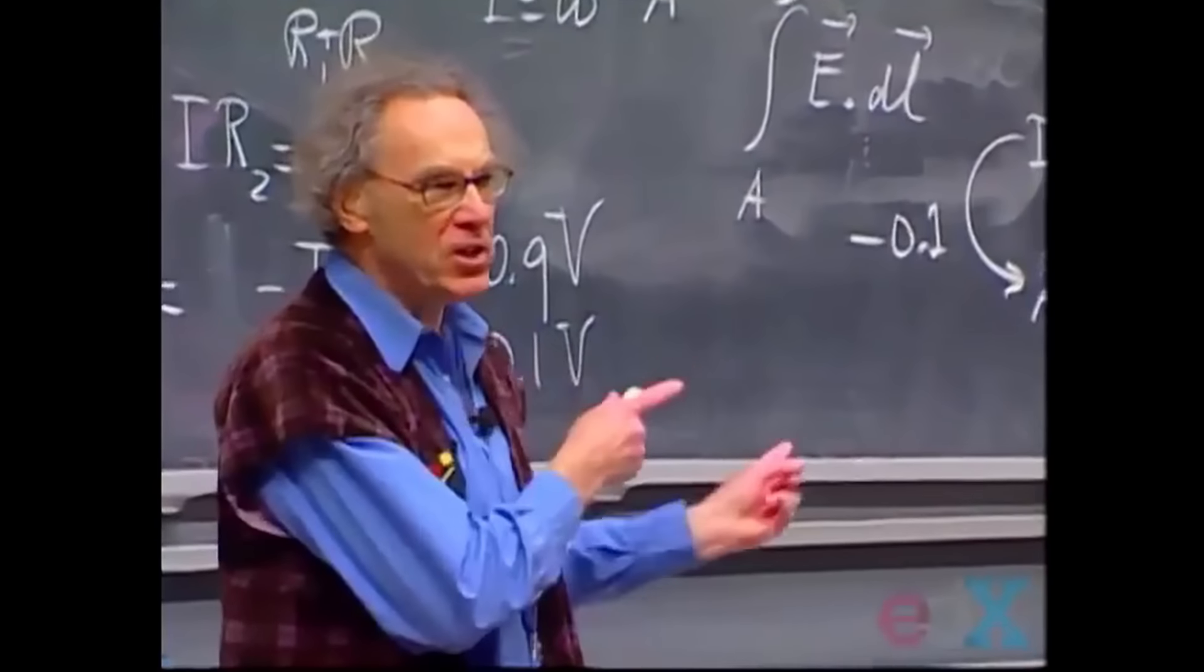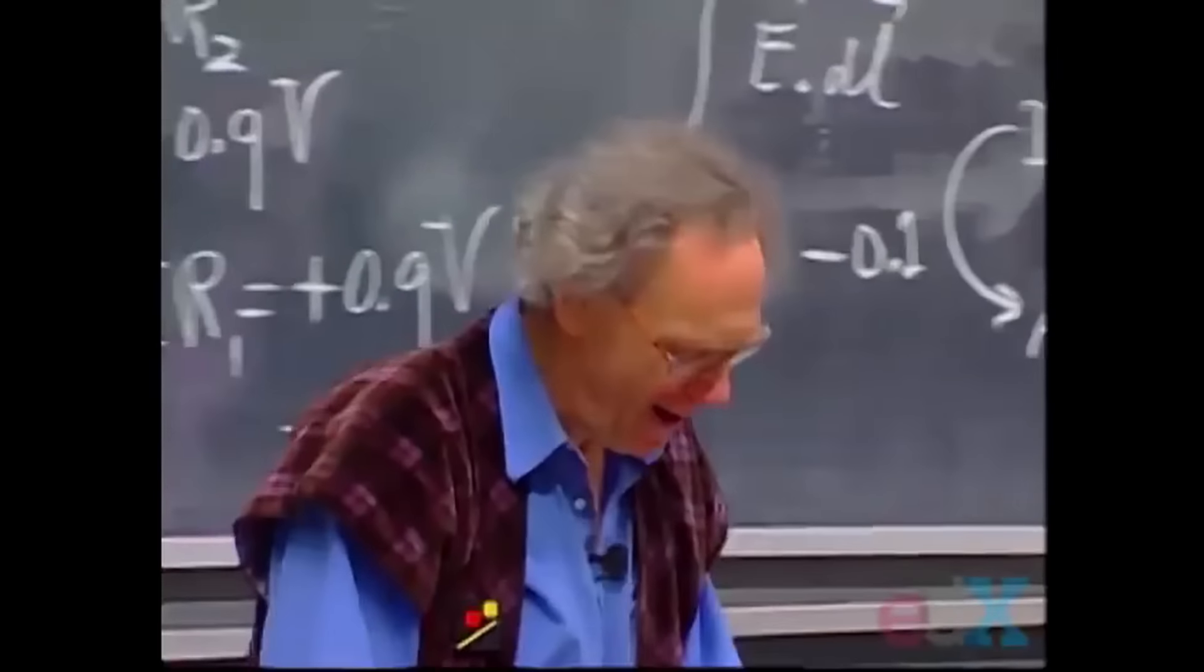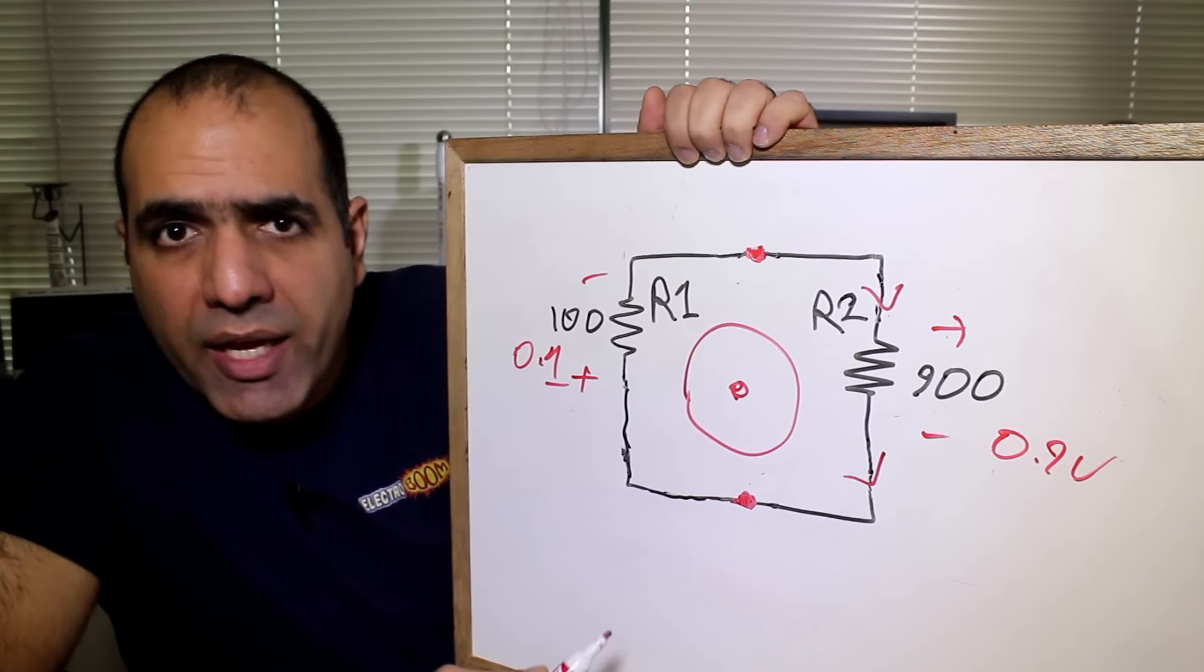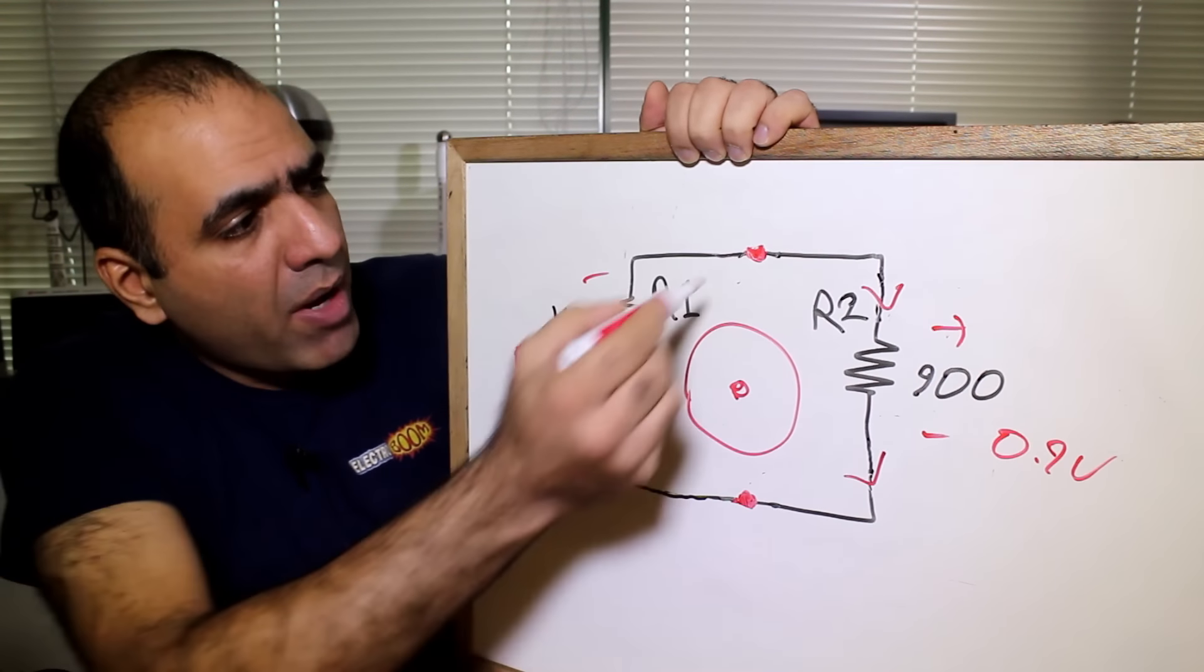So Dr. Lewin concludes, so Kirchhoff is for the birds and Faraday is not. Then Dr. Lewin does an interesting experiment to prove this. He measures across the exact same two points in the circuit with two different scopes at the same time and shows that each scope shows a different number.